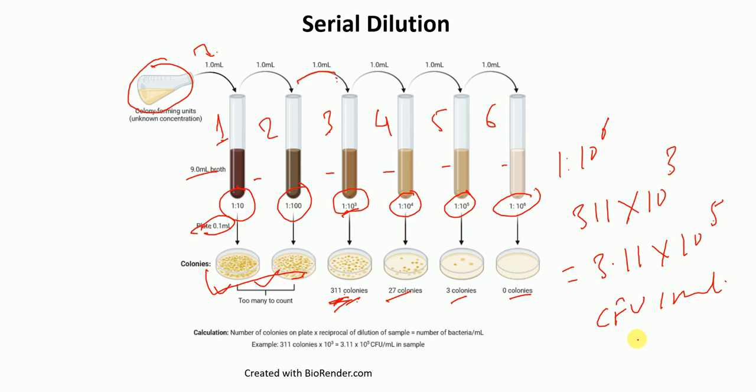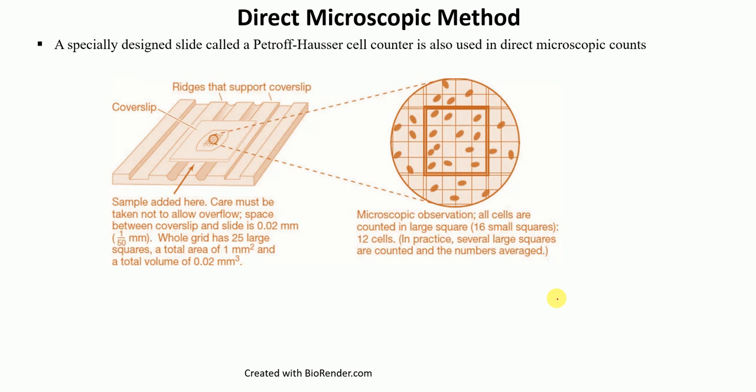This is serial dilution. The next method used for measurement of bacterial growth is called the direct microscopic method. In this method, we use a special slide called the Petroff-Hauser cell counter. Basically, we add our sample to the slide and then count the number of cells in the large square.